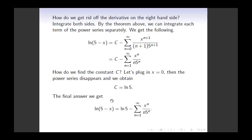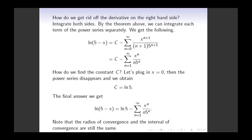The radius of convergence of this new power series is still 5, and the interval of convergence is still from negative 5 to 5. The radius of convergence and interval of convergence do not change after integration. This was a nice example.